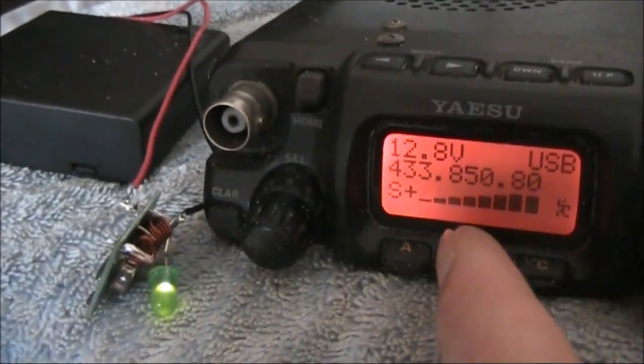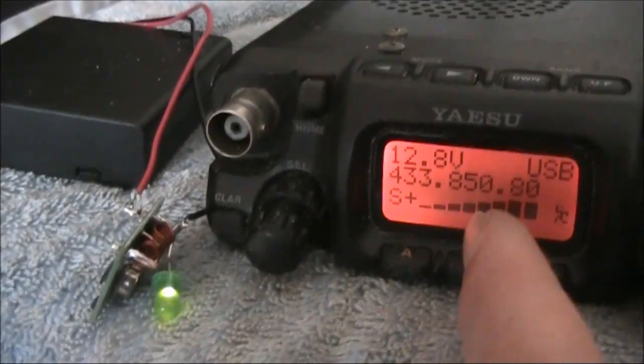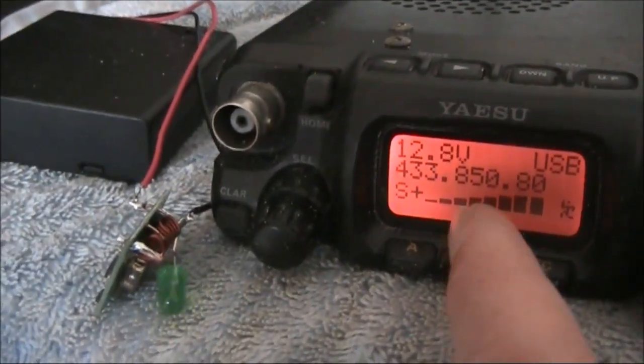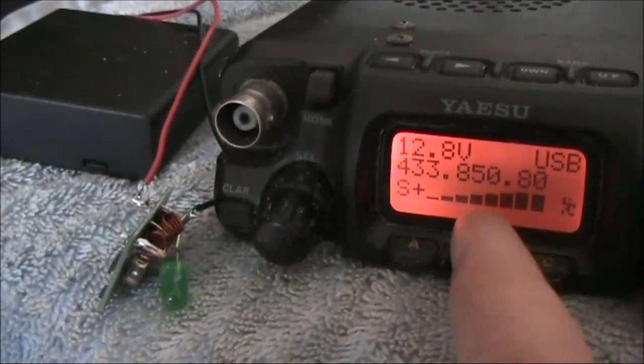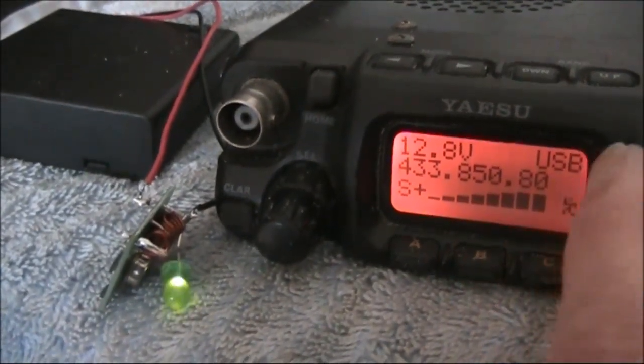Another thing is the frequency is in the LIPD sub-band but well away from the most common frequency of 433.92, which is often used by wireless doorbells, car remote controls, and other small devices.